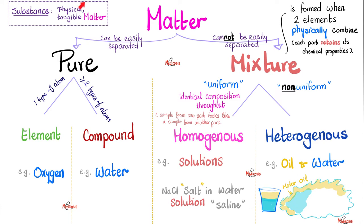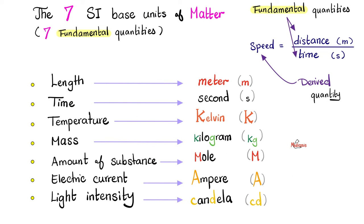What's a substance again? It's physical, tangible matter. When we combine two elements together chemically, that's a compound. But when we combine two elements together physically, that's a mixture. We talked about the seven standard international base units of matter before — please pause and review, these are very important. Lowercase m is meter, uppercase M is mole, lowercase c-d is candela, uppercase C-d is cadmium, which is an element in the periodic table.